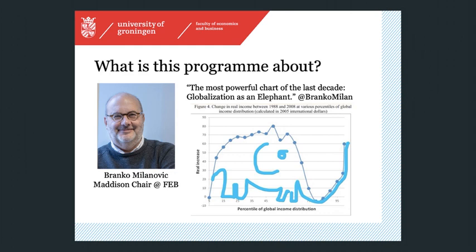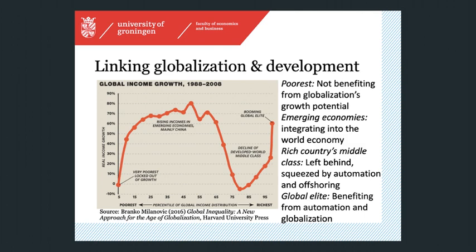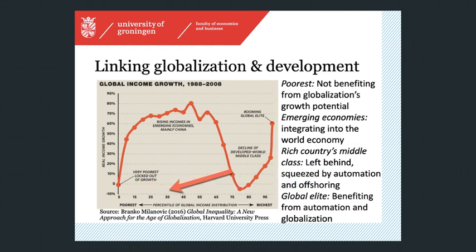And to illustrate this, I'm using the elephant chart introduced by Branko Milanovic, a renowned expert on inequality and a holder of the Madison chair at the Faculty of Economics and Business. The elephant chart illustrates how the income of people have grown, with people ranked by their income at the start of this period. The novelty is that this ranks people wherever they live. What this shows is that the very poorest 5% of the population did not see growth in their income between the late 80s and the late 2000s.